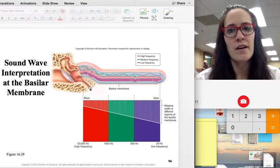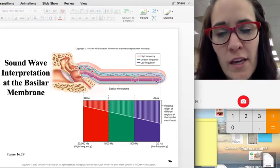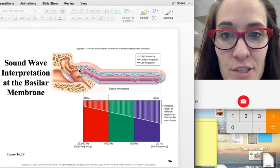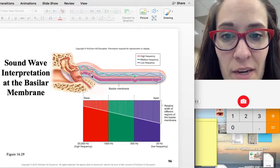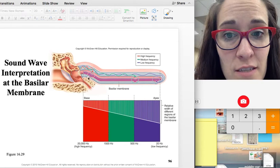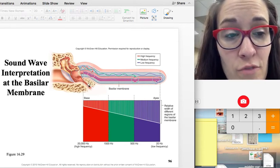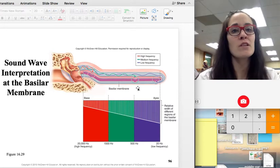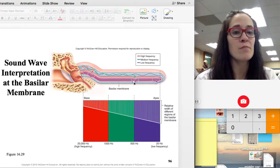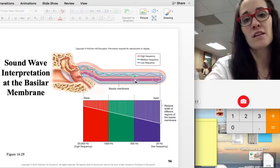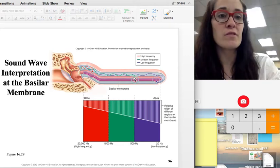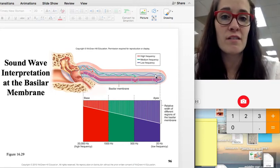So here is a great image. Here is our oval window right here where the stapes attaches and the sound waves are coming in. If it's a high frequency sound wave, it will cause this part of the basilar membrane to vibrate or move. If it's a lower pitch sound or medium pitch sound or frequency sound, it's going to cause this area to vibrate. If it's a very low pitch sound, this area is going to vibrate.